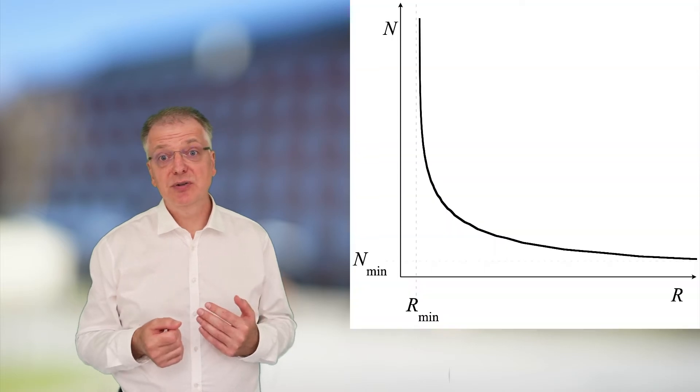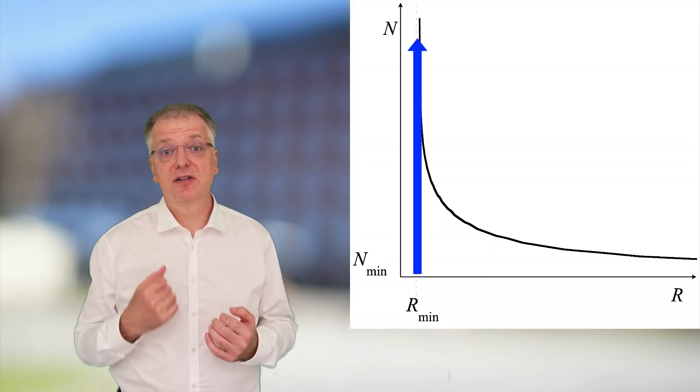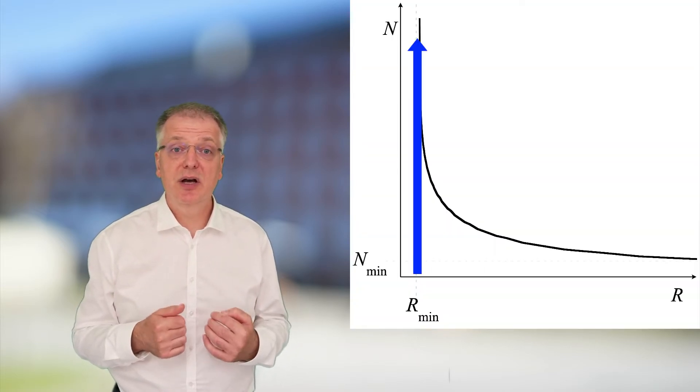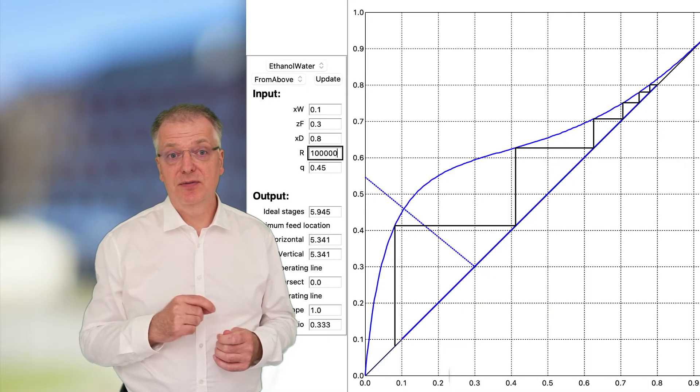At the minimum reflux ratio, you will need an infinite number of equilibrium trays to carry out the separation. R-min is dependent not only on the characteristics of the system curve and the required composition in the distillate, but also on the composition in the feed and the state of the feed.